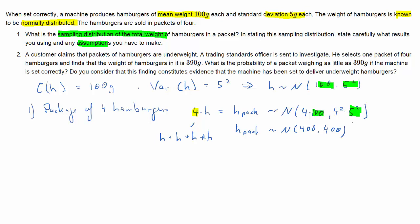That was quite natural from the question. So let's calculate the probability that the combined weight of the hamburgers in a pack of four is smaller than or equal to 390 grams.